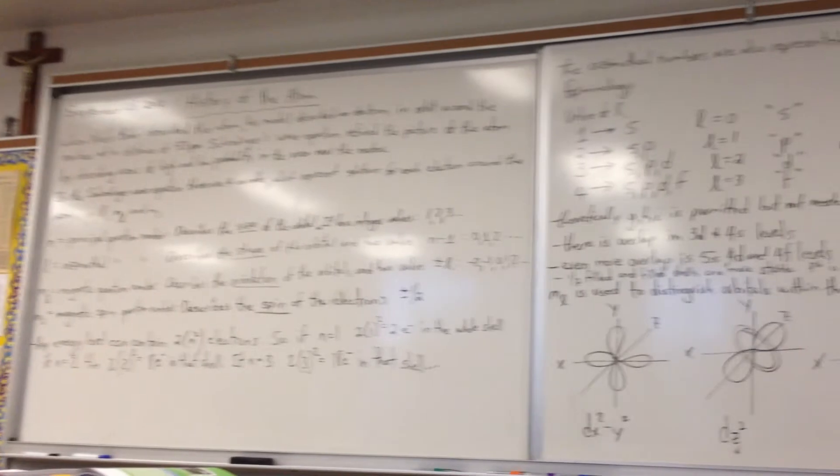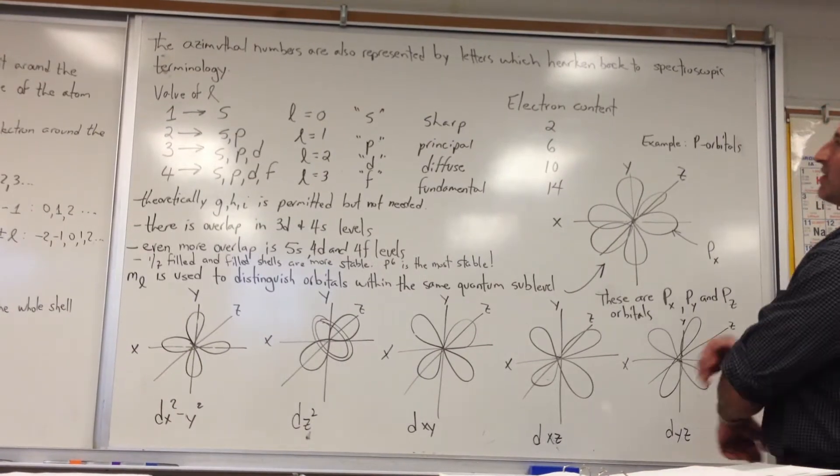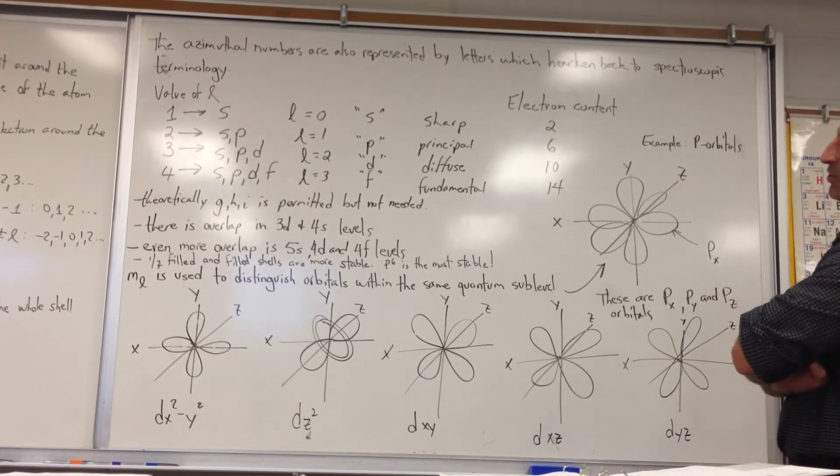The azimuthal numbers, which are represented by the letter L, the second principal quantum number, are also represented by letters, which harken back to spectroscopic terminology.